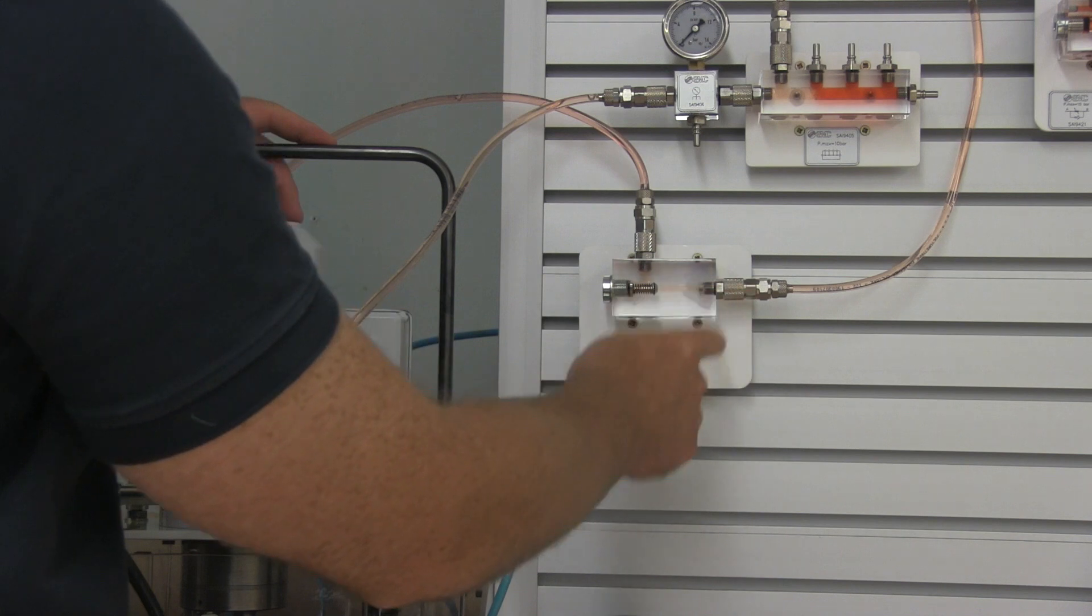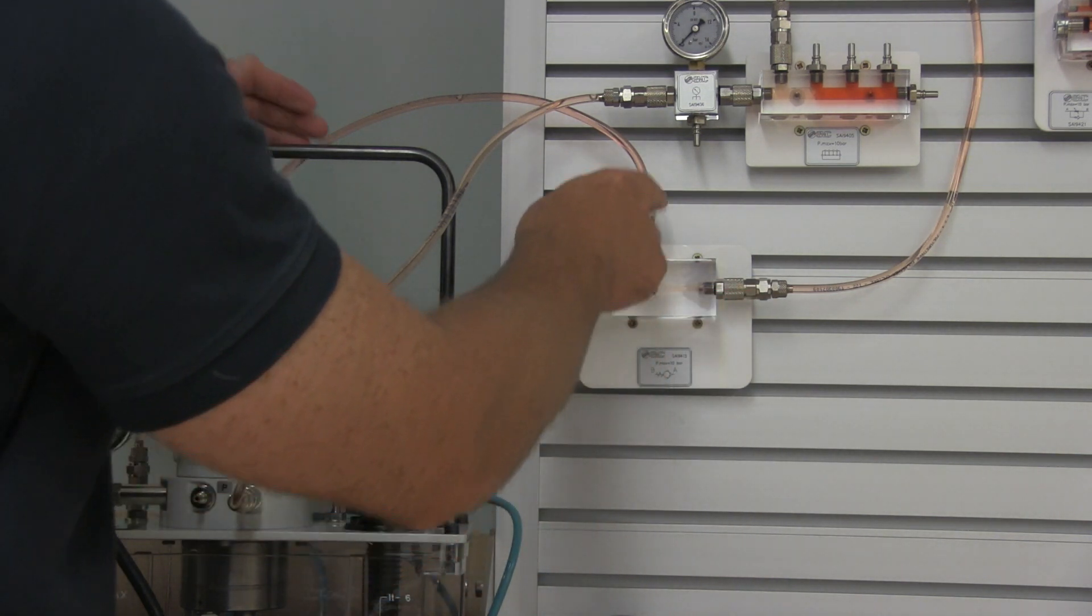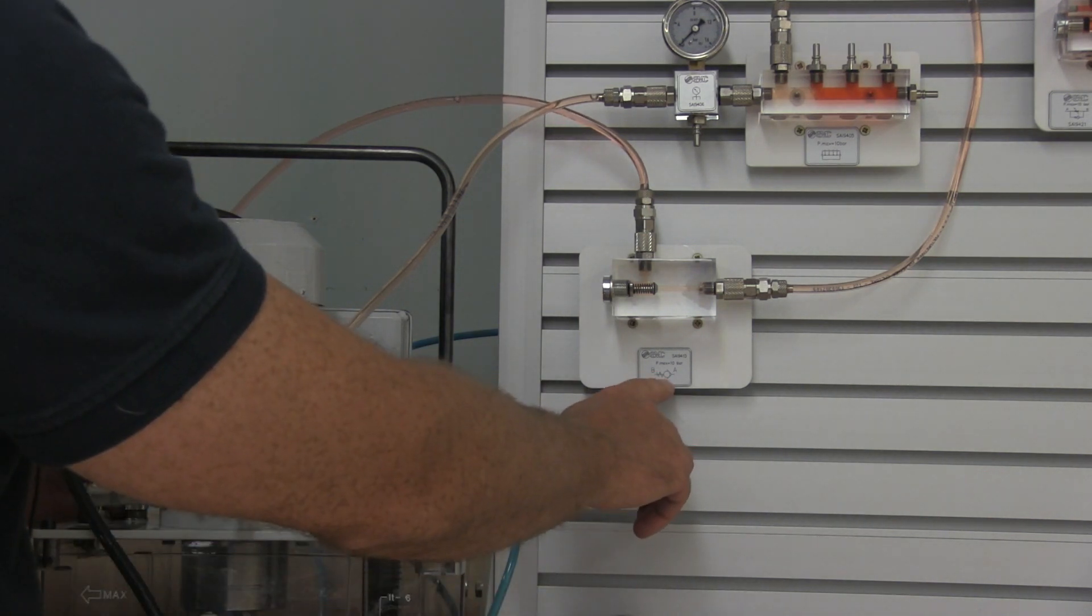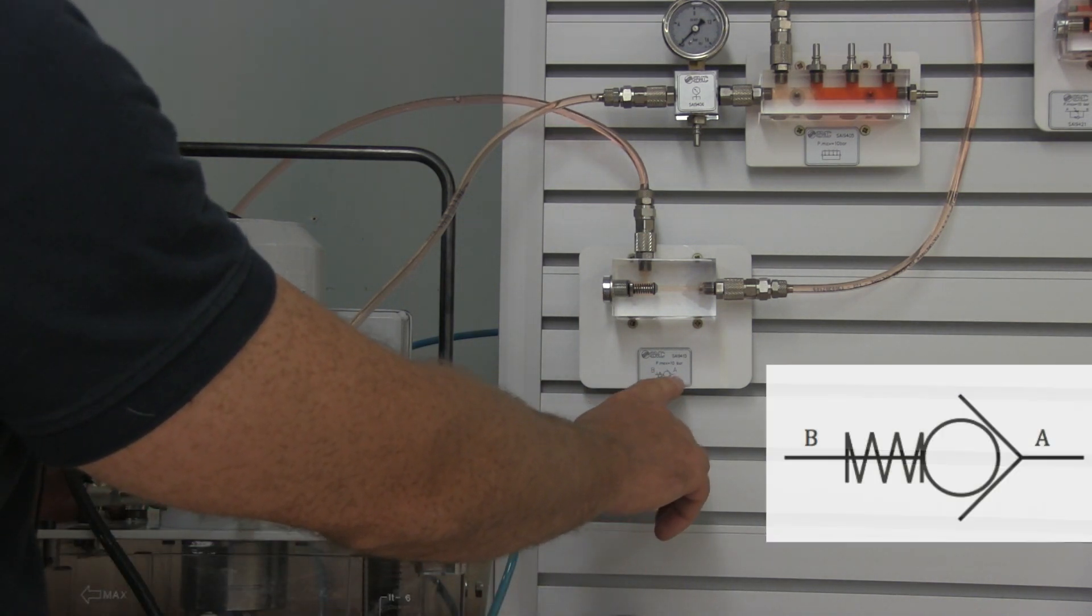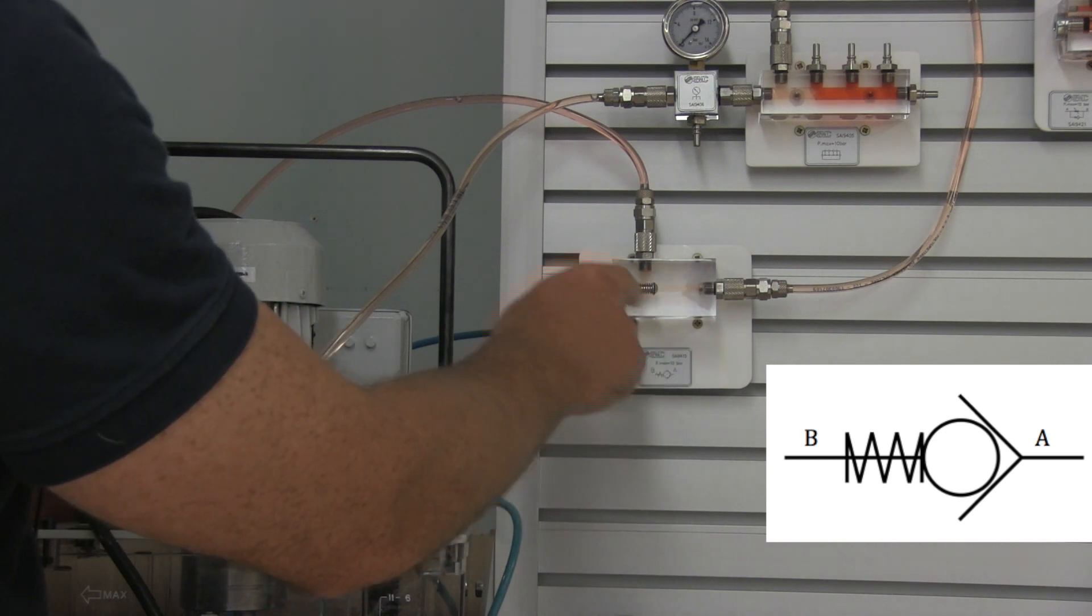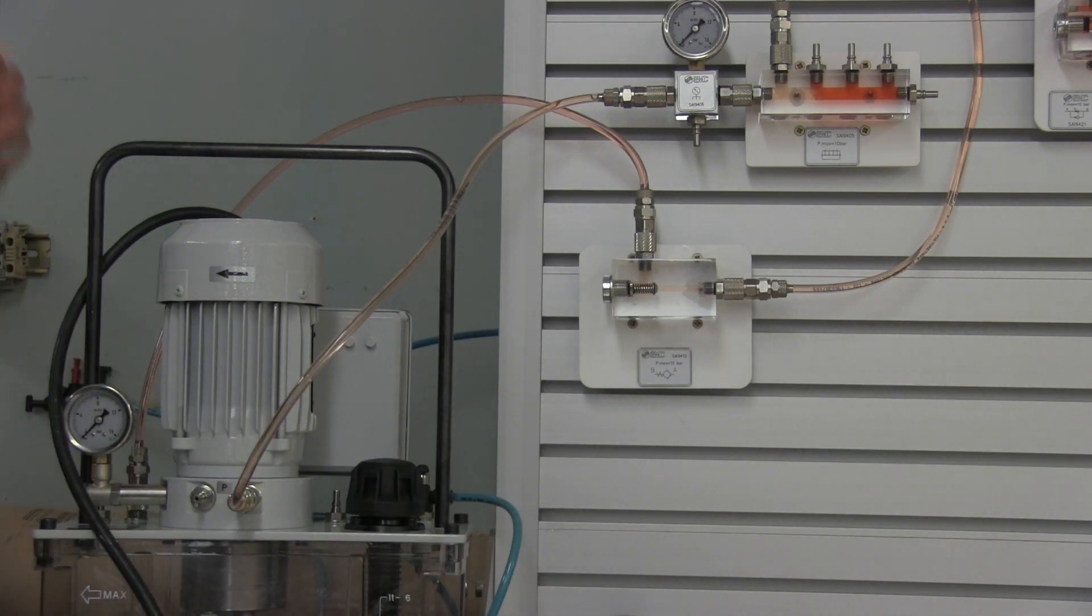From the manifold I'm running into the A port of a check valve, then from B back down to tank. In this circuit, the ball should move so the A should force that ball over or the poppet and allow oil to flow through at a minimum pressure. Let's go ahead and take a look.